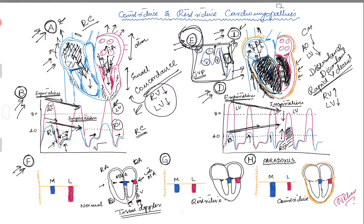Looking at this bar graph — the lateral mitral annulus in a normal heart has a lot of movement. It goes up and down with every systole and diastole, so there is a lot of displacement of the lateral mitral annulus.